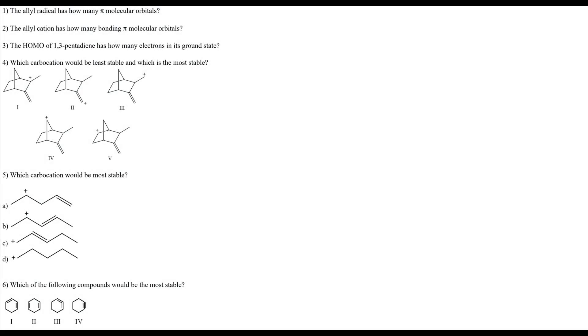This is chapter 13 and we will be going over the review questions. The first question asks how many pi molecular orbitals an allyl radical has.